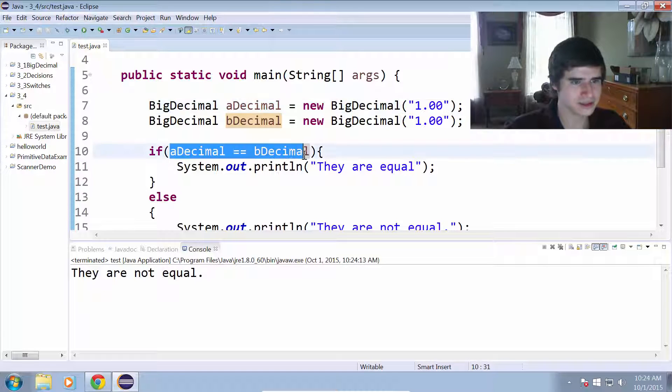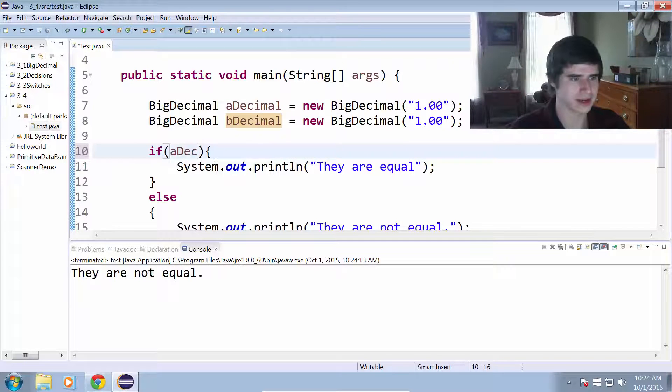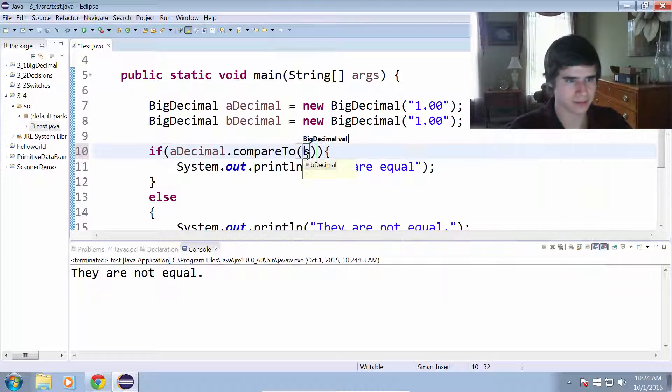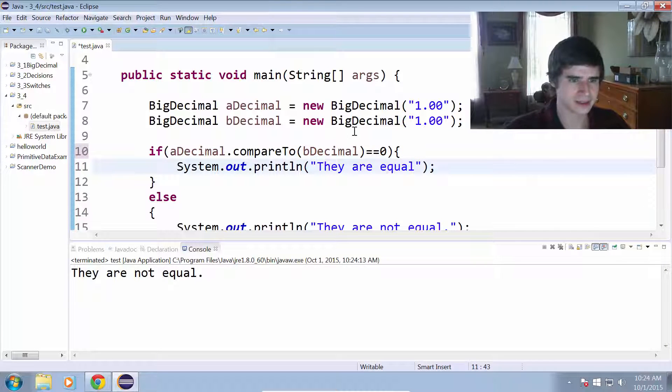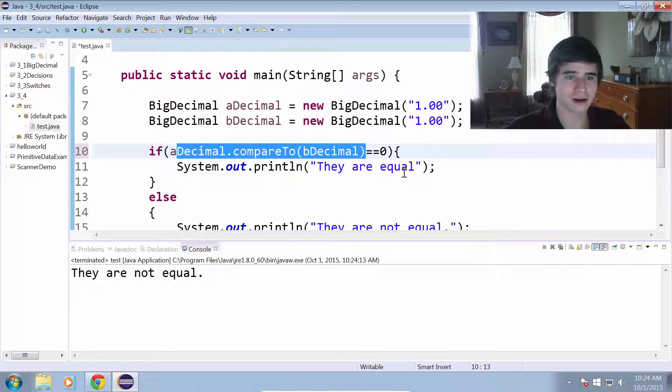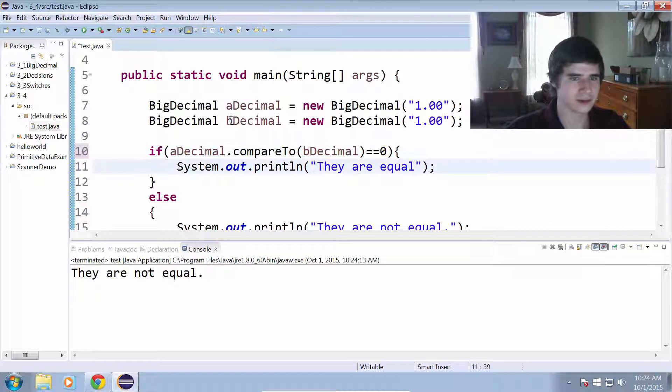So we have to use the compareTo method. So we'll do aDecimal dot compareTo bDecimal, and that's going to return a value equal to zero if they are equal. So we're going to say equal zero. So that'll be zero equals zero, which means that they are equal. We run that, and now it says they are equal as we would hope it would do.